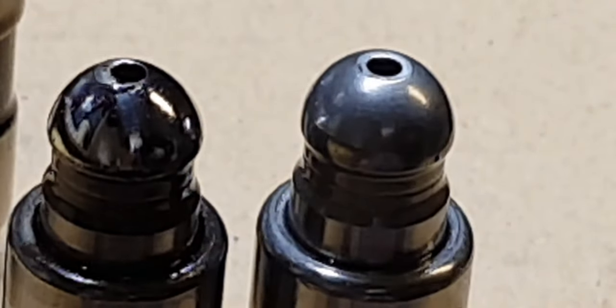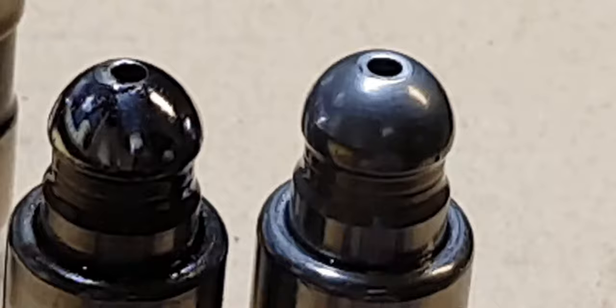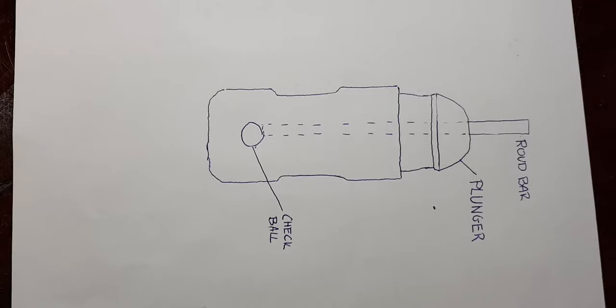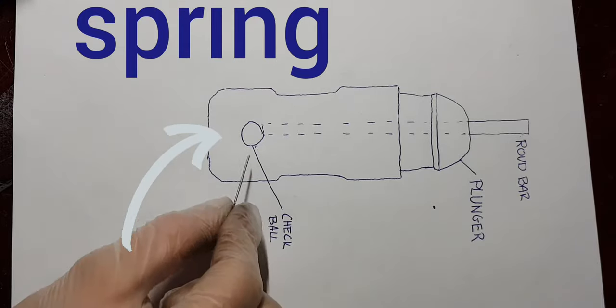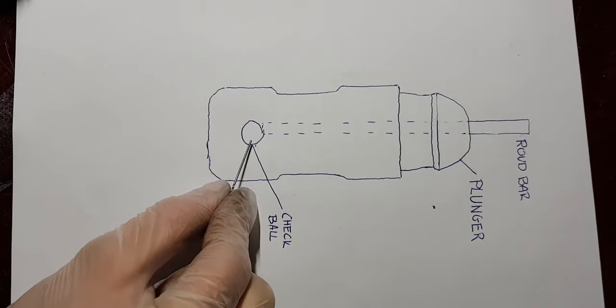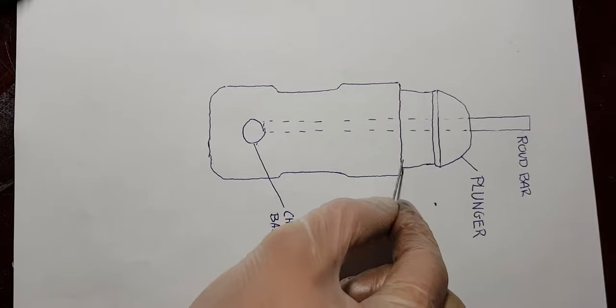Let's begin with the construction of the HLA. Here is a cutaway view, more or less just to show you how it operates. This is the check ball, under it is a return spring located inside the housing. The plunger can be moved up and down. Here is a round bar approximately one millimeter, used as a tool for releasing the check ball.